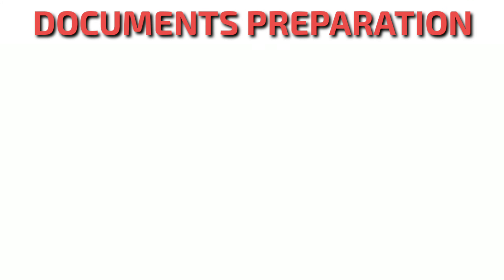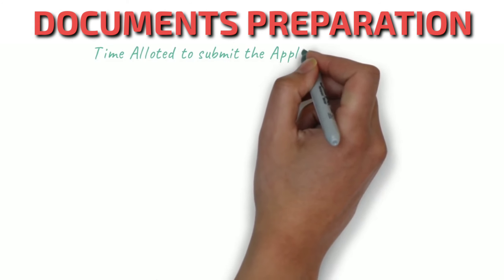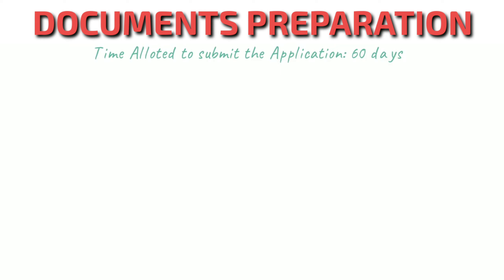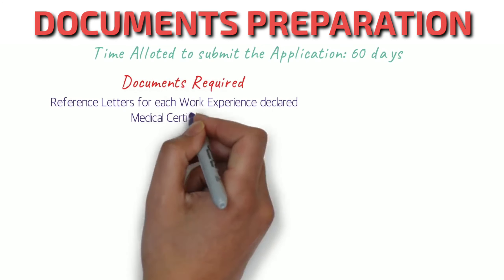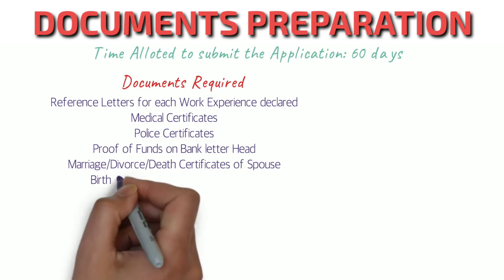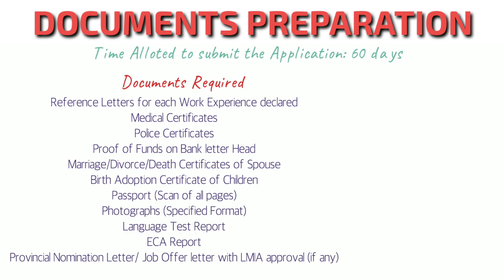The next step is document preparation. You must ensure all documents are submitted within 60 days — it was previously 90 days but has been reduced to 60. The required documents include: a reference letter for each work experience declared (so if you worked for four companies, you need letters from all employers), a medical certificate, a PCC (police certificate), proof of funds on bank letterhead, a marriage certificate, a birth or adoption certificate, passport, photographs, language test results, and ECA report. If you applied to a PNP program, submit the nomination letter. If you have an LMIA-approved job offer, attach that as well.